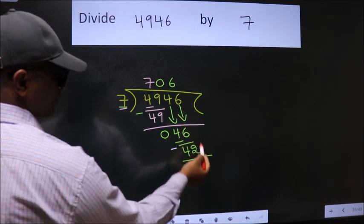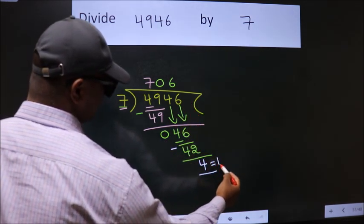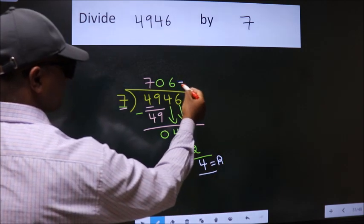No more numbers to bring down, so we stop here. This is our remainder. This is our quotient.